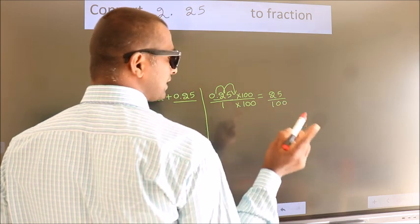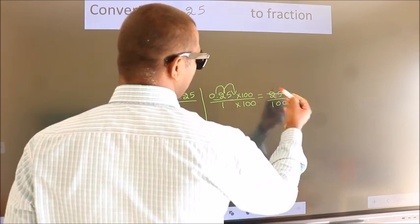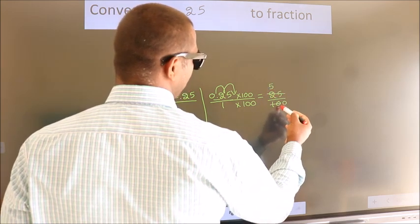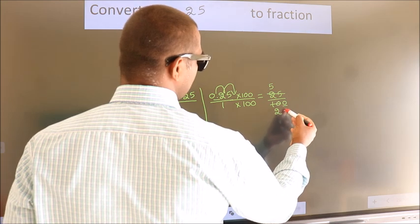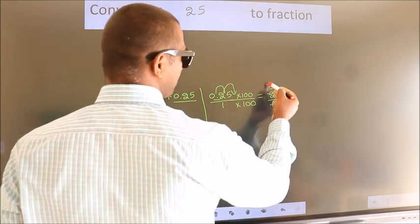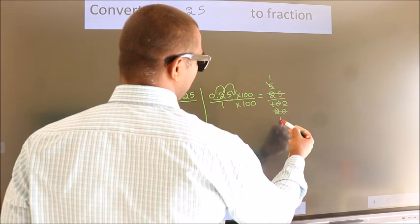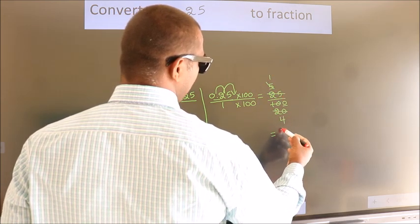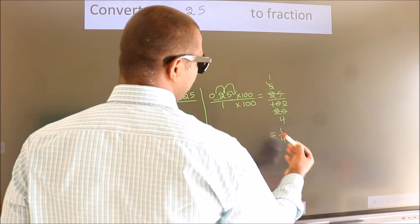Now I cancel with 5. 5 fives, 5 twos, this 0 as it is down. I cancel with 5 again. 5 ones, 5 fours. So the fraction we got is 1 by 4.